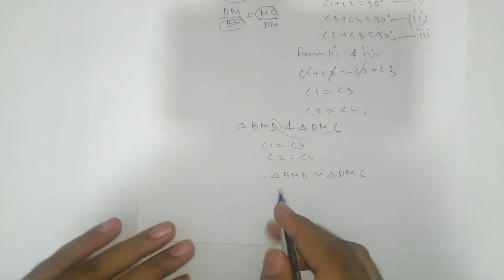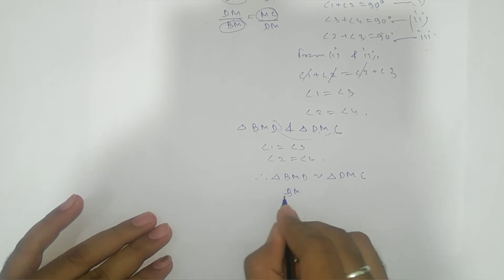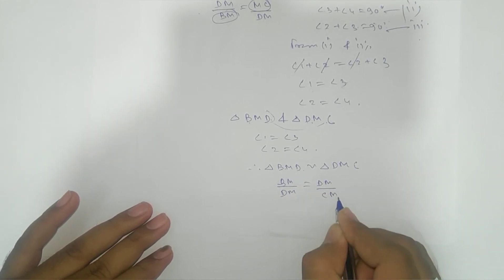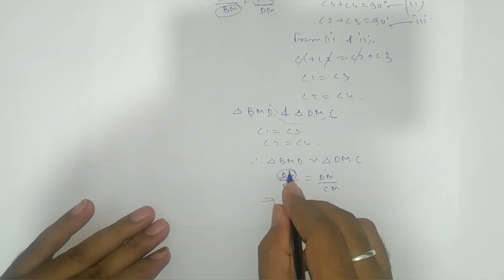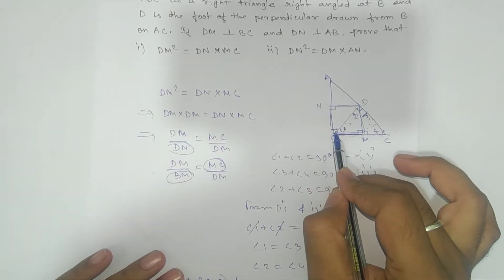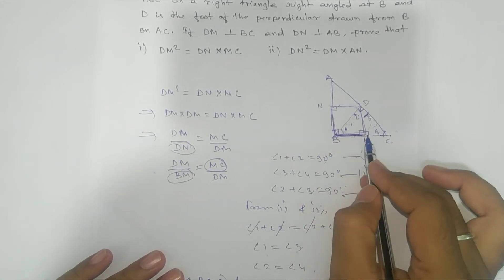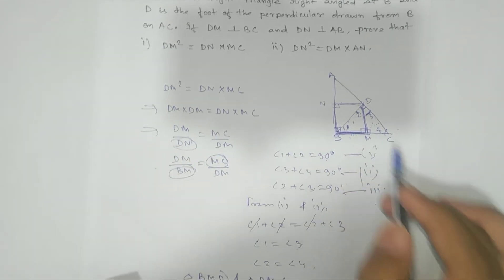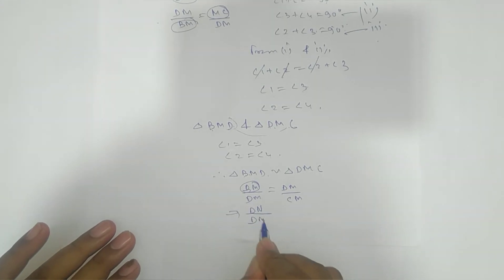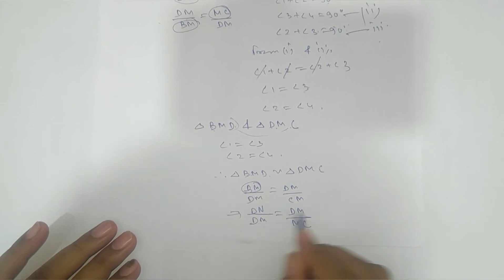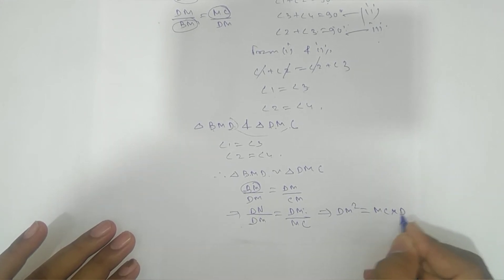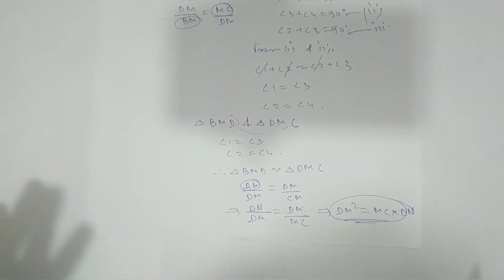Since the triangles are similar, we write the ratios: BM/DM = DM/CM. Since BMDN is a rectangle, BM equals DN (opposite sides of a rectangle are equal). Substituting: DN/DM = DM/MC. Cross-multiplying gives DM × DM = MC × DN, that is DM² = DN × MC. This is our required result for the first part.